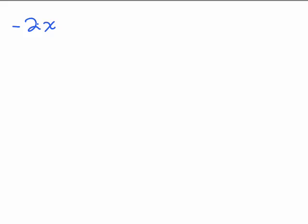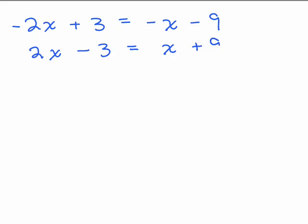Now, what if you had something like negative 2x plus 3 equals negative x minus 9? Any time you have a minus sign in front of a variable, if you don't want it to be a minus sign, you could just change the signs of all the terms. So if I changed all the signs — taking the opposite of both sides — you could write 2x minus 3 equals x plus 9.